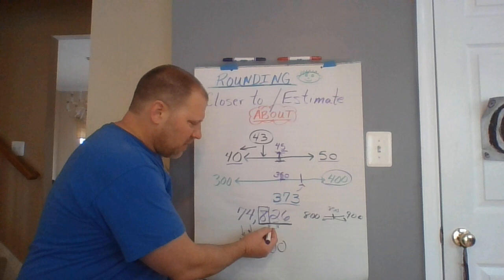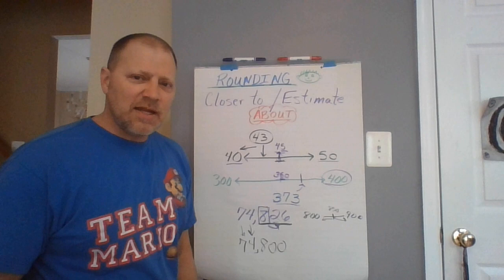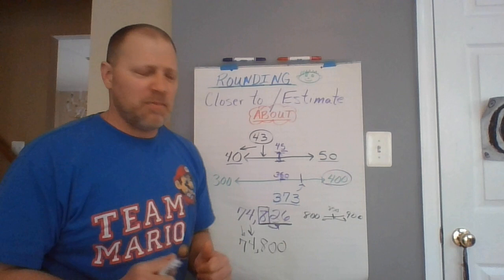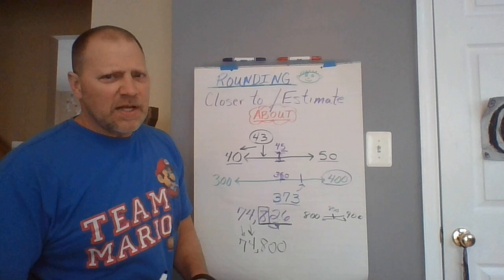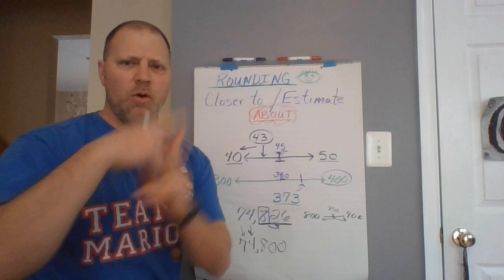If this number is a 0, 1, 2, 3, or 4, you want to take that number to the floor. You want to keep it the same. Keep it the same. Now, if this number was a 5, 6, 7, 8, or 9, you want to take that number up one time. So you want to go up. You want to go up.